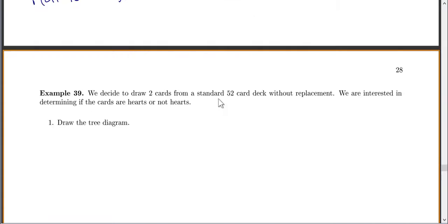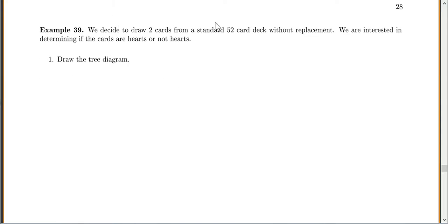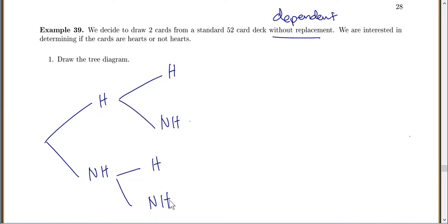Let's do one more. We want to draw two cards from a standard 52 card deck without replacement. Because it's without replacement, we know that's dependent because they do affect each other. We're interested in determining if the cards are hearts or not hearts. Draw the tree diagram. First you can either get a heart or not a heart, then your second card can either be a heart or not a heart.